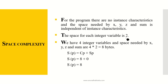We know that an integer variable takes 2 bytes. We have four integer variables, so space needed by x, y, z, and sum is 4 times 2 equals 8 bytes. There are no runtime variables that are changing, so the dynamic part SP is 0. Therefore, SP equals CP plus SP equals 8 plus 0, giving SP equal to 8. The space complexity for this program is 8 bytes.